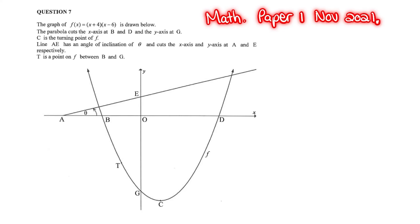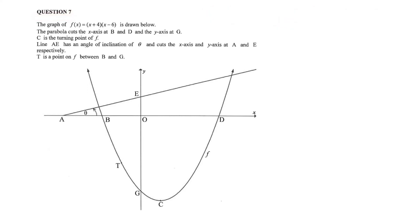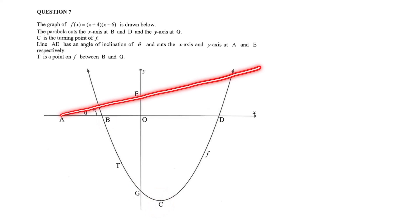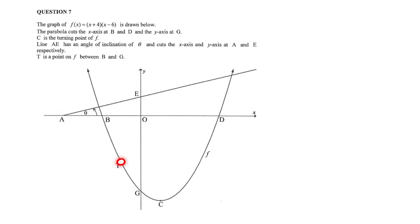We are going on with Mathematics Paper 1 of November 2021, Question 7. The graph of f(x) equals x plus 4 times x minus 6 is drawn below. The parabola cuts the x-axis at B and D and the y-axis at G. C is the turning point of f. Line AE has an angle of inclination of theta and it cuts the x and y-axis at A and E respectively. T is a point on the graph of f between B and G.